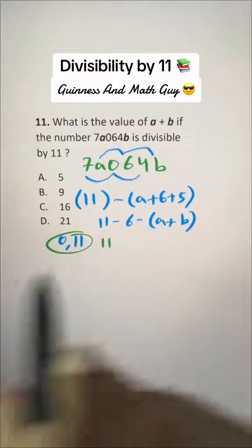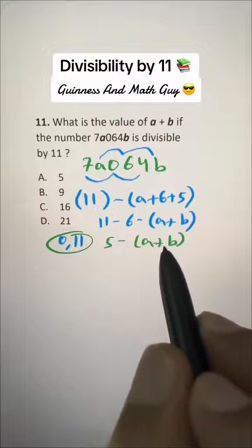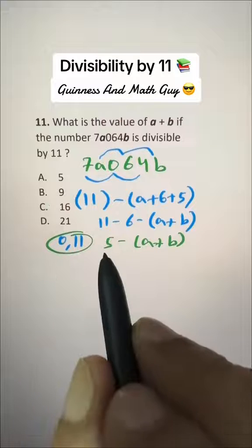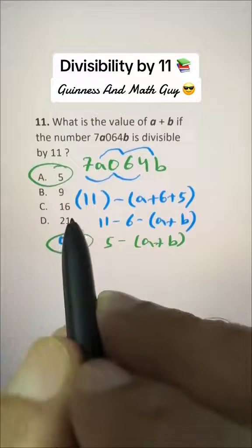11 minus 6 is 5, so 5 minus A plus B. Now 5 minus any number cannot be 11, it has to be 0. So 5 minus what number is 0? 5 minus 5 is 0. That's our answer, choice A.